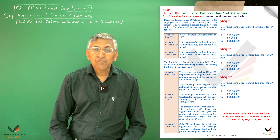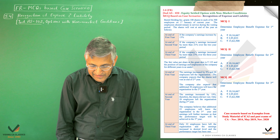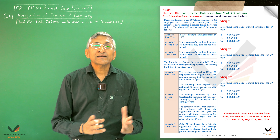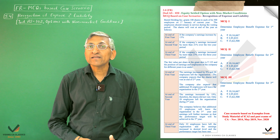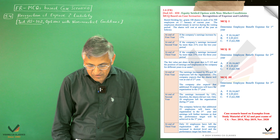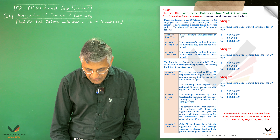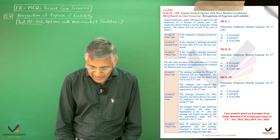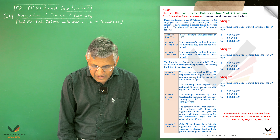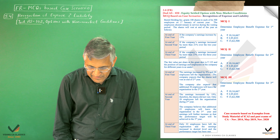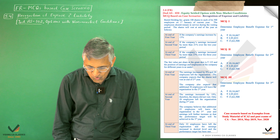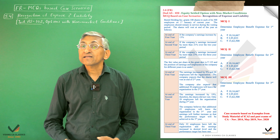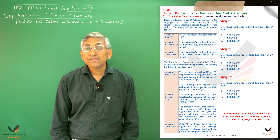At the end of Year 2, the company's earnings increased by 19%. The company believes shares will vest at the end of Year 3, and estimates that an additional 25 employees will leave in Year 3, with earnings expected to further increase so that the performance condition will be achieved in Year 3. The vesting period estimation is revised to three years.